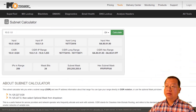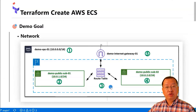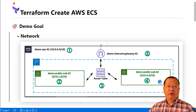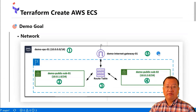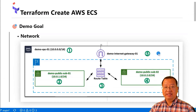Switch back to the markdown file. The third resource is the public route table, which is used to route network traffic to the internet. Next, we create another public subnet with the IP CIDR block of 10.0.2.0/24. The fifth resource is an internet gateway, which provides access to the internet for the instances in the VPC.